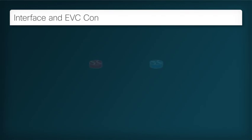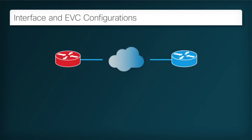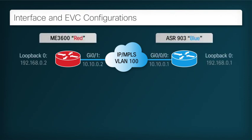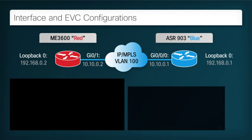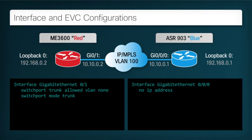We have already identified the interfaces which have been assigned for connection to the backhaul network. We assume that the defaults for negotiation, speed, and duplex are satisfactory at the default value of automatic negotiation. We next use the EVC command line interface, or CLI, to start the definition of the Ethernet service.